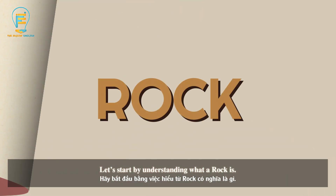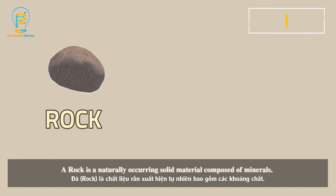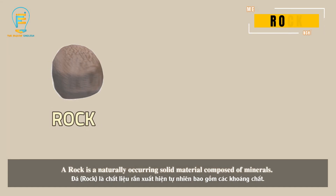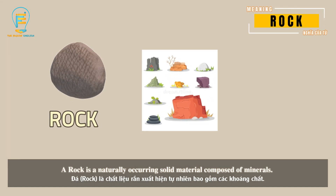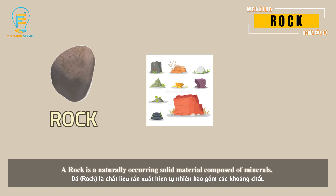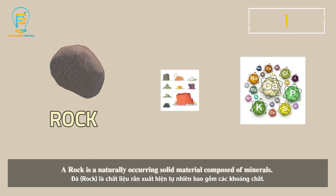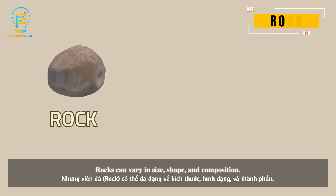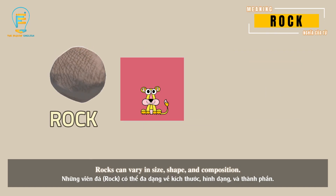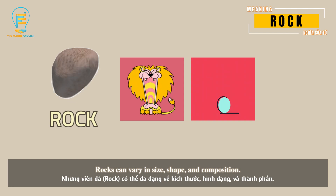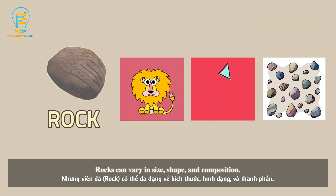Let's start by understanding what a rock is. A rock is a naturally occurring solid material composed of minerals. Rocks can vary in size, shape, or composition.